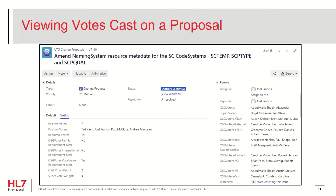You will likely want to monitor how people are voting on your proposal during the consensus review process. To view the voting, click on the Voting tab underneath the details area of the proposal. This will hide some of the proposal information and display detailed information on the voting. You can always see the hidden proposal information by clicking back to the default tab. The voting area displays information about who has voted positively and negatively.